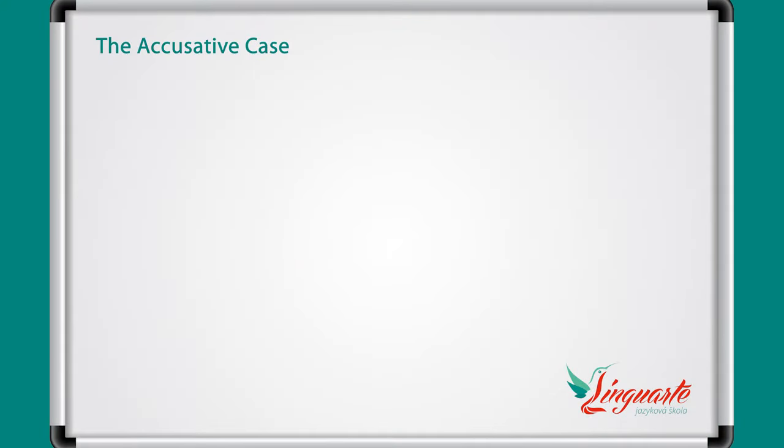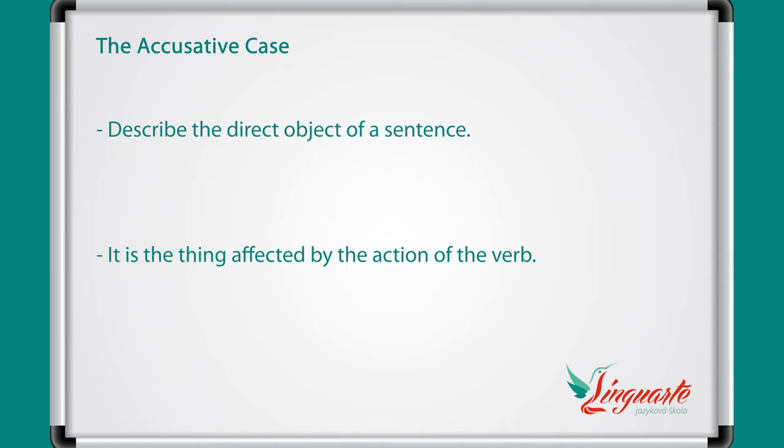If you want to know more about the cases in Slovak language you can check this video where we explain all the cases and their meaning. In this video we will focus on the accusative case. It is used to describe the direct object of a sentence. That means the accusative case is the thing affected by the action of the verb.